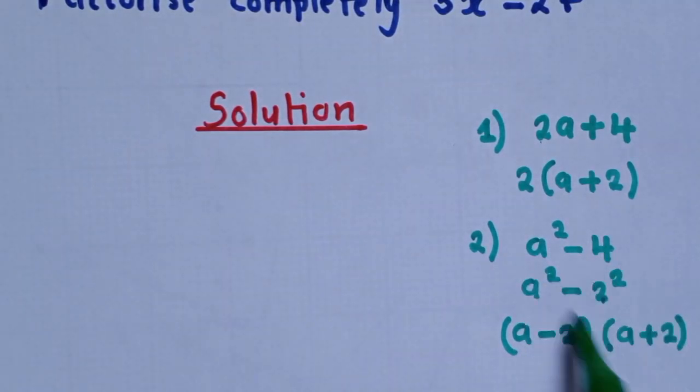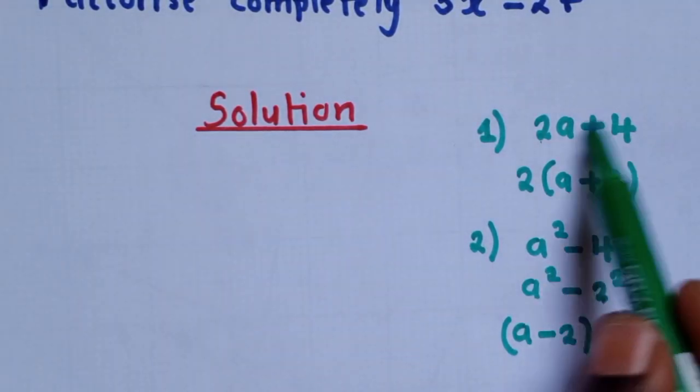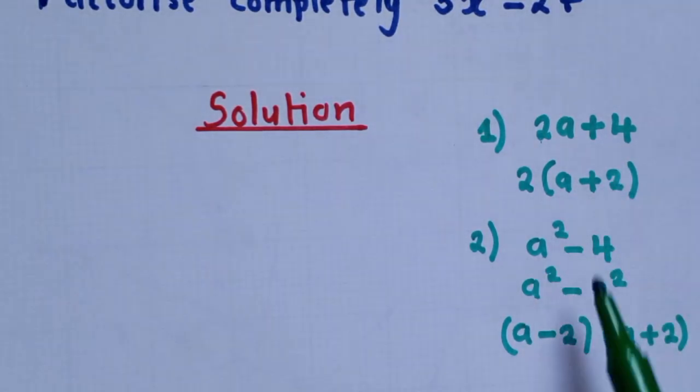So the idea here is difference of two squares. This one is common factorization. This one is factorization by difference of two squares.